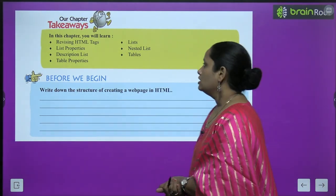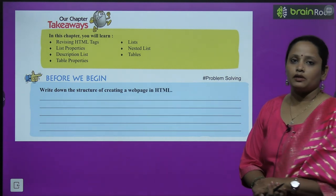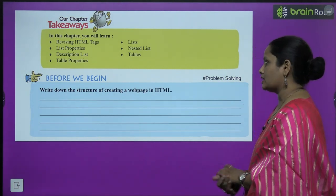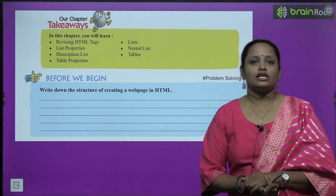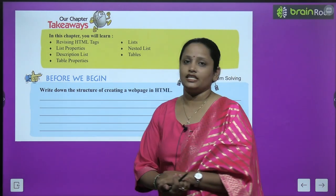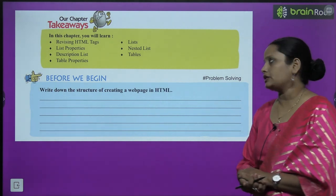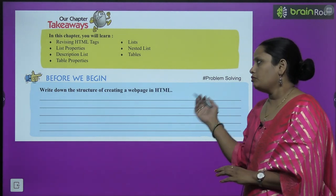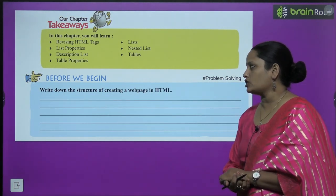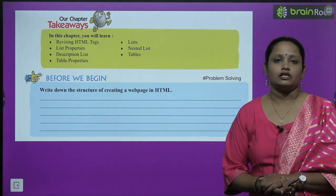In this chapter we will revise HTML tags that we have studied in the previous class — what are the list properties, what are the nested list, what are the description list, what are the tables and the properties of the table. Before that, let's do this exercise: write down the structure of creating a web page in HTML.